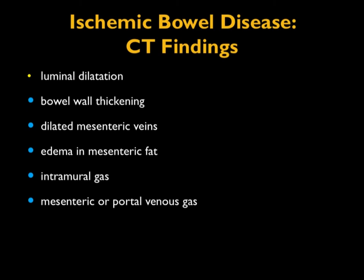The earliest finding of ischemic bowel is bowel dilated with fluid — typically not very helpful. Then you see bowel wall thickening, dilated mesenteric veins, edema in the mesenteric fat, intramural gas, and mesenteric then portal venous gas, which are very ominous signs. When you see air in the portal venous system, it's usually ischemic bowel, and that patient has high morbidity and high mortality.